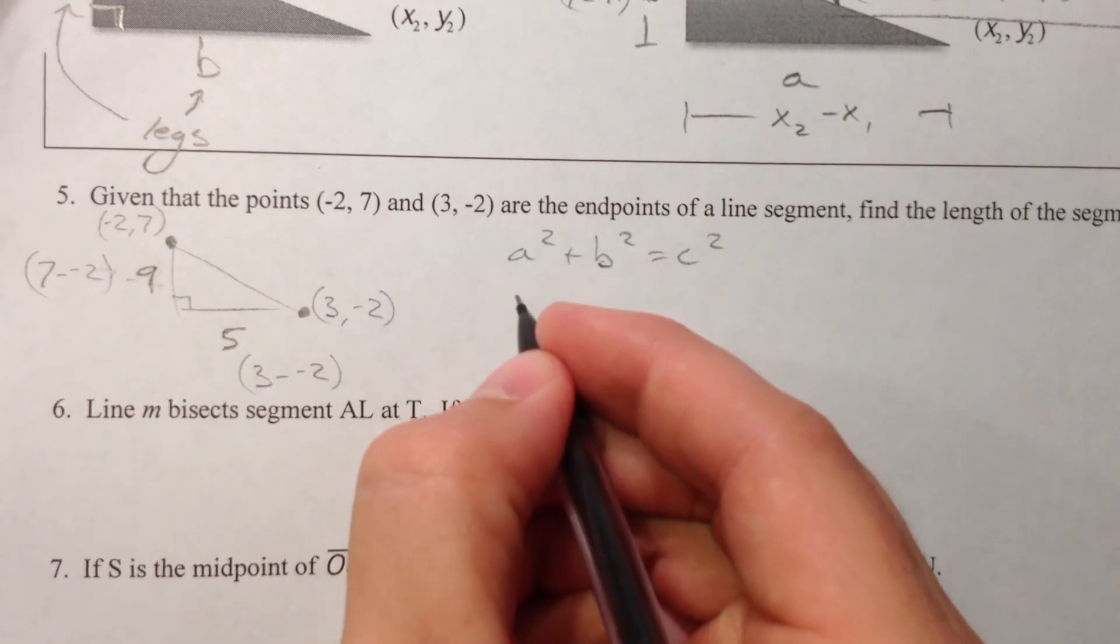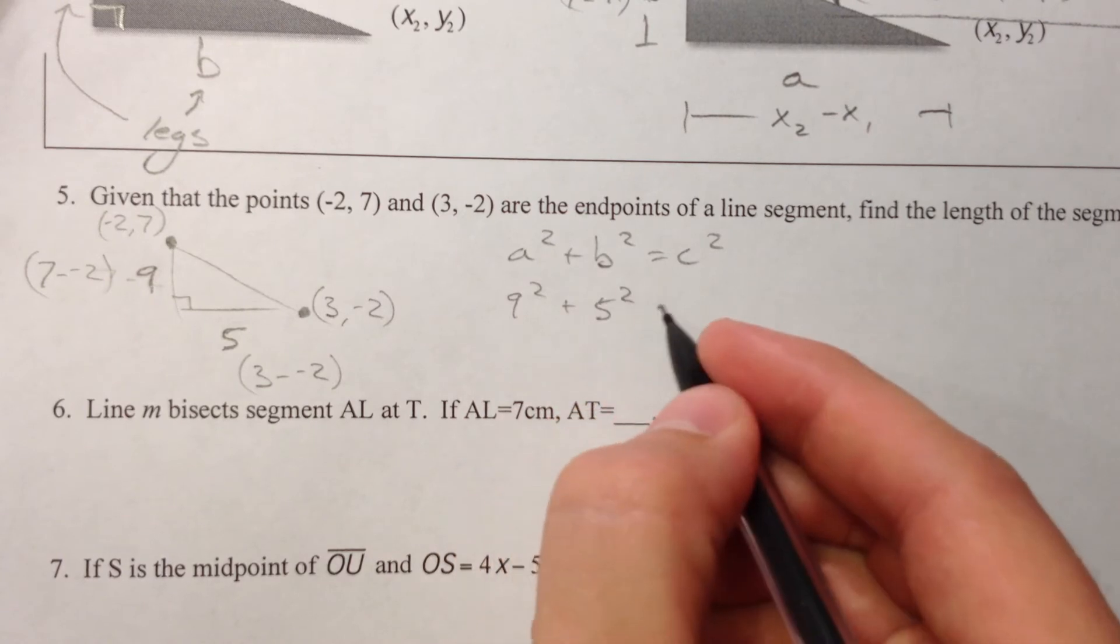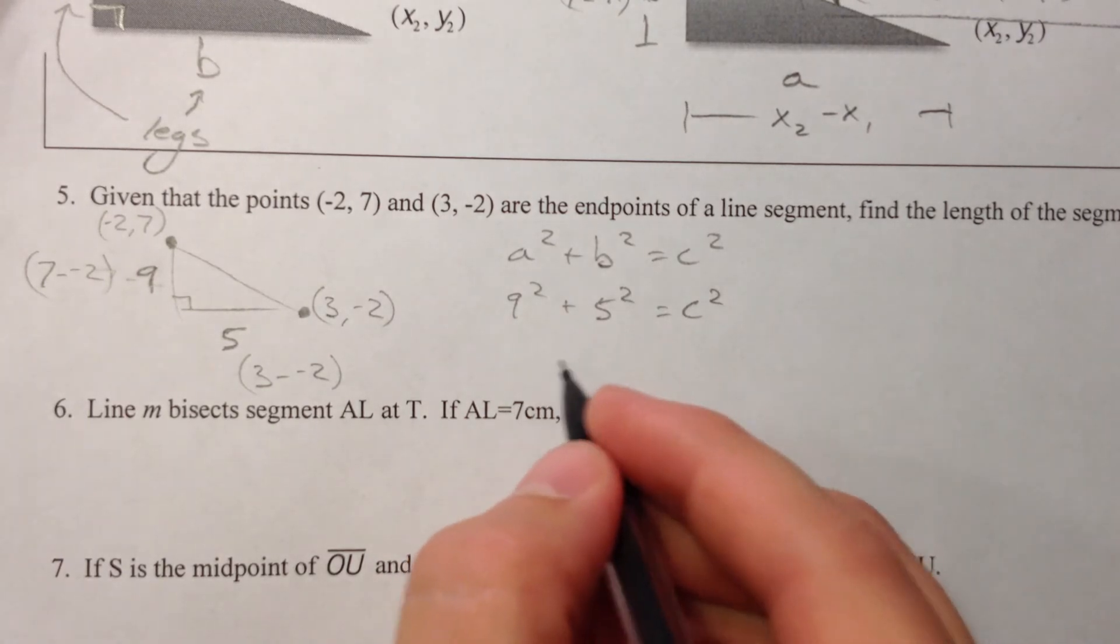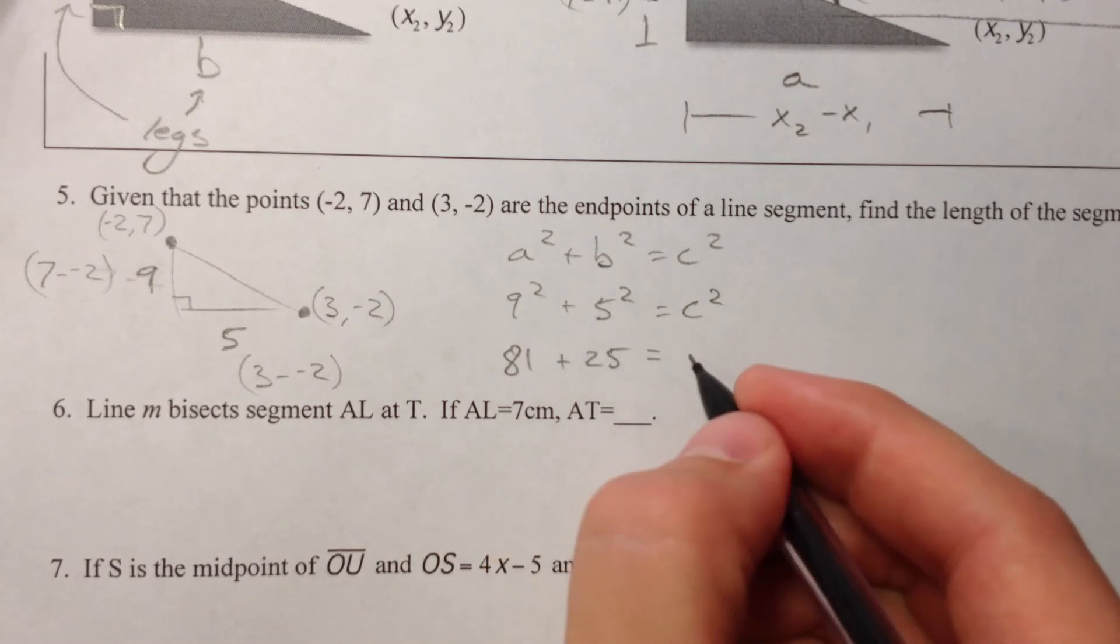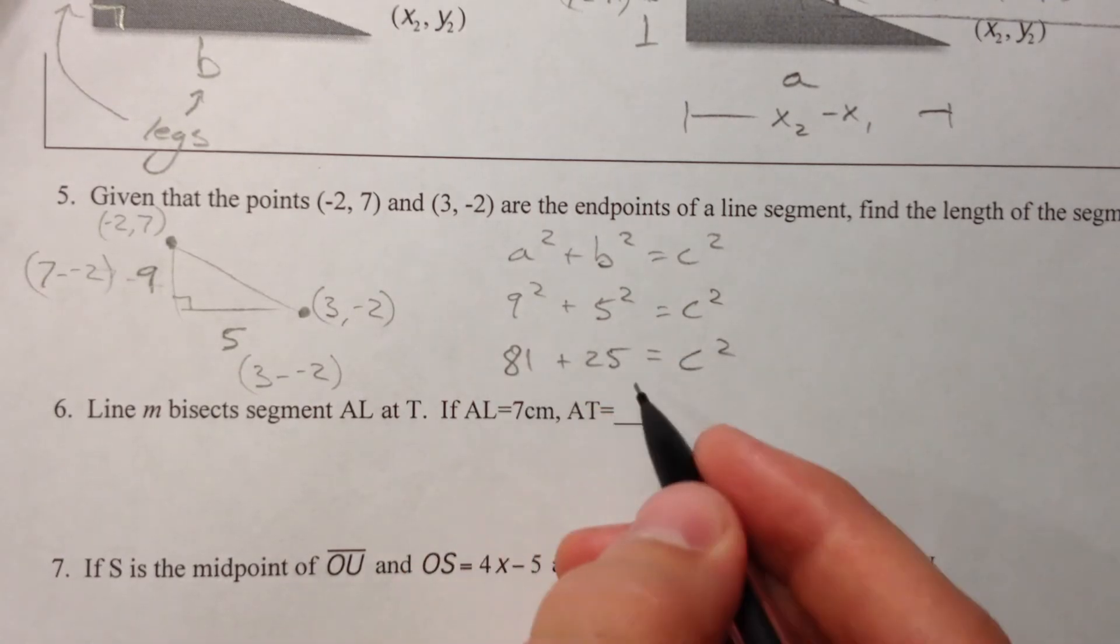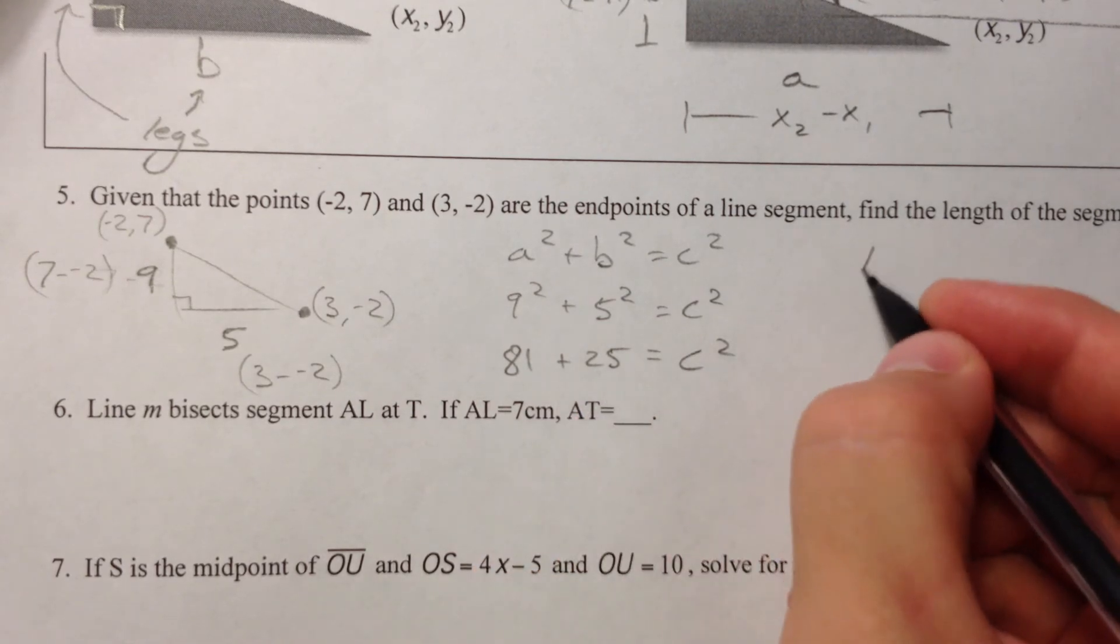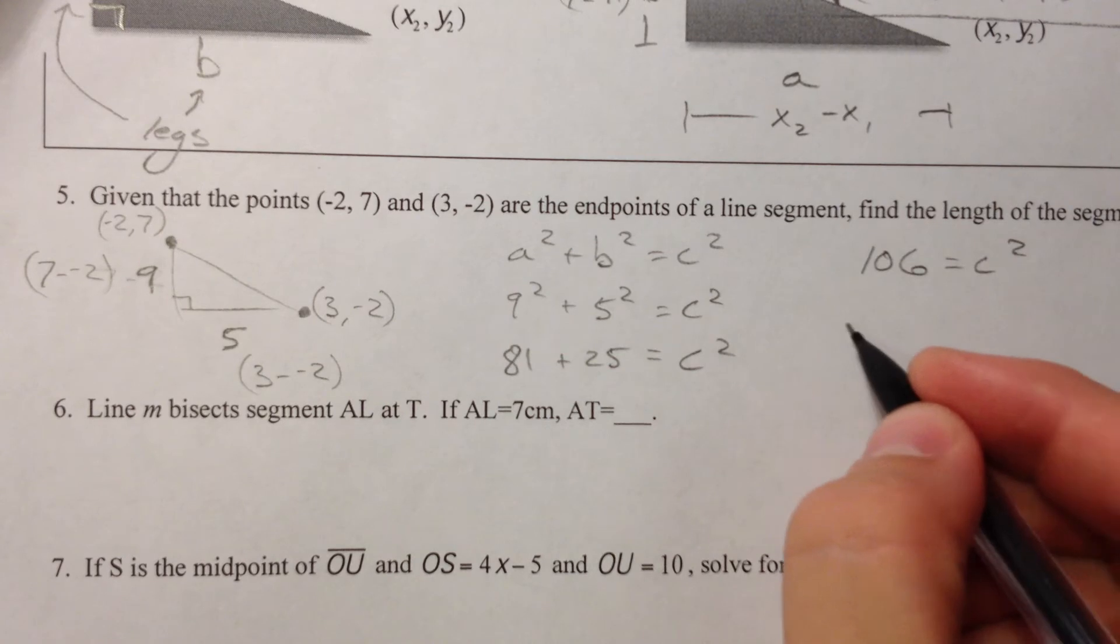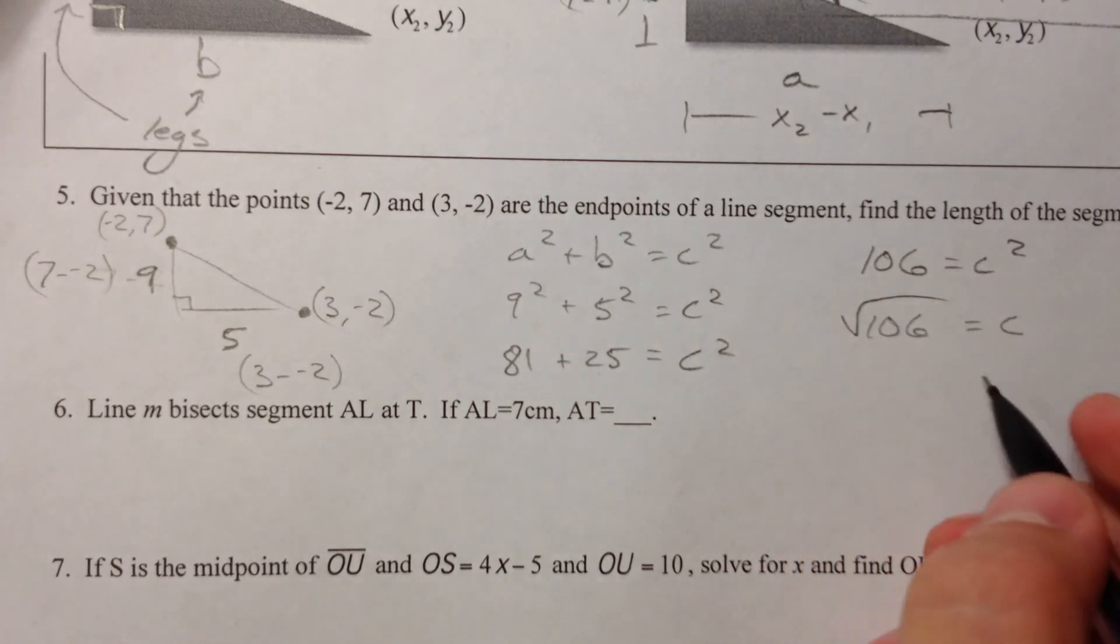So 9 squared plus 5 squared, 81 plus 25 equals c squared. So 81 plus 25 is 106 and then I can take the square root of 106 and that is equal to c and you can also approximate that if you wanted to on your calculator.